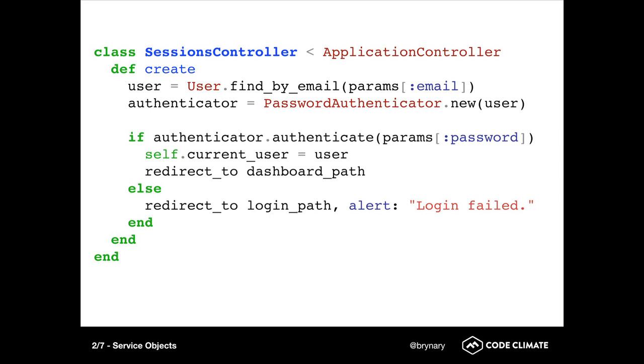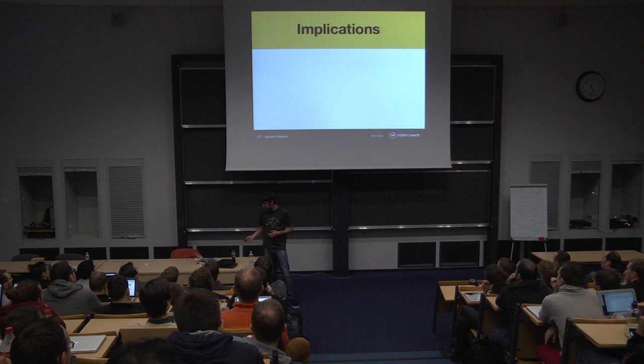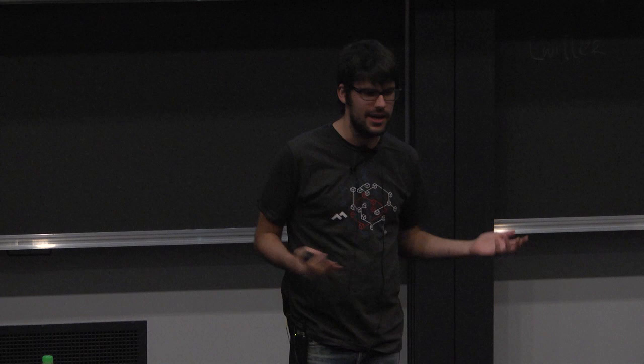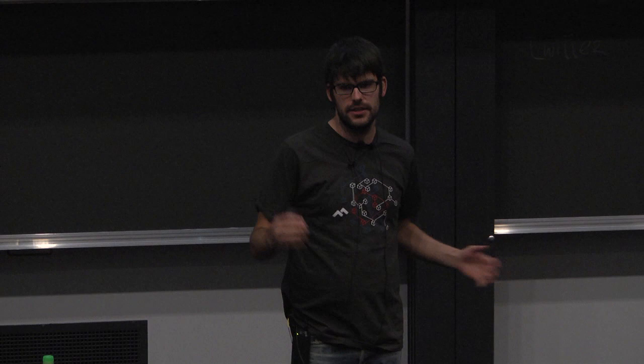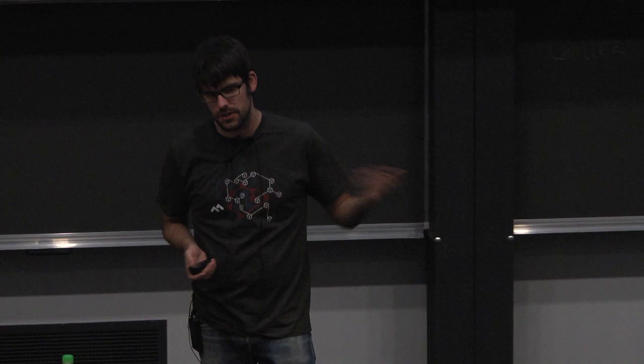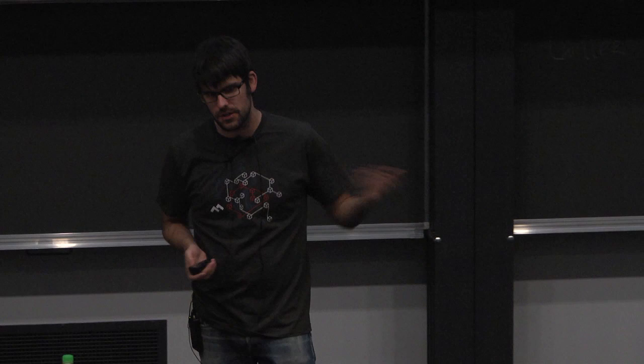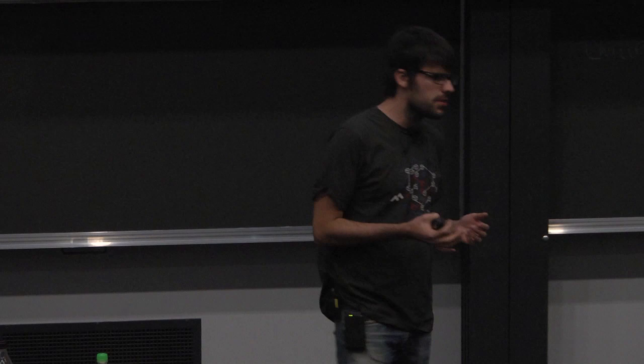So to use it, say from your sessions controller, you would just instantiate an instance of the authenticator, and you would call it. This is what I mean by having a short-lived life cycle. So what did we get out of that? This is going to be a common theme. We simplified the model. We can use service objects to avoid a case that I refer to as callback hell. And that's when you've got multiple models interacting together, all with a bunch of callbacks defined. And have you ever been there trying to figure out exactly what's going on when you save an object? That can be quite difficult, and service objects can help with that.